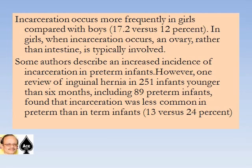Incarceration occurs more frequently in girls compared with boys — 17.2 versus 12 percent. In girls when incarceration occurs, an ovary rather than intestine is typically involved. One review of inguinal hernia in 251 infants younger than 6 months, including 89 preterm infants, found that incarceration was less common in preterm than in term infants — 13 versus 24 percent.